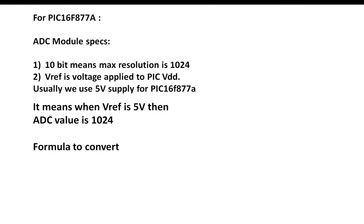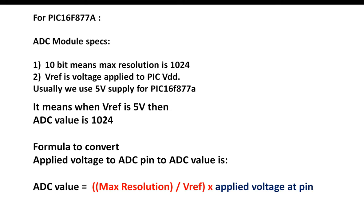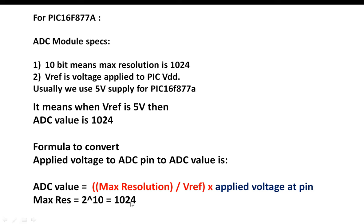The formula to convert applied voltage to an ADC value is: ADC value = (applied voltage / Vref) × maximum resolution. Maximum resolution is 2^10 = 1024 (constant), and Vref is 5 volts (constant). The only thing that changes is the voltage applied at the pin — whatever the sensor, module, or device outputs to the ADC pin. That is how you implement it.